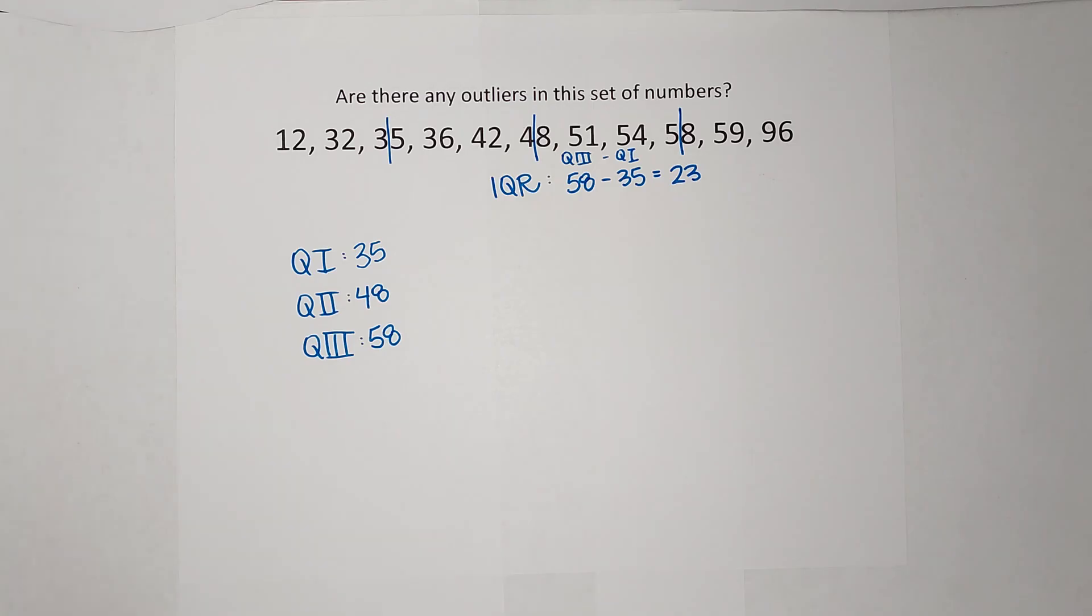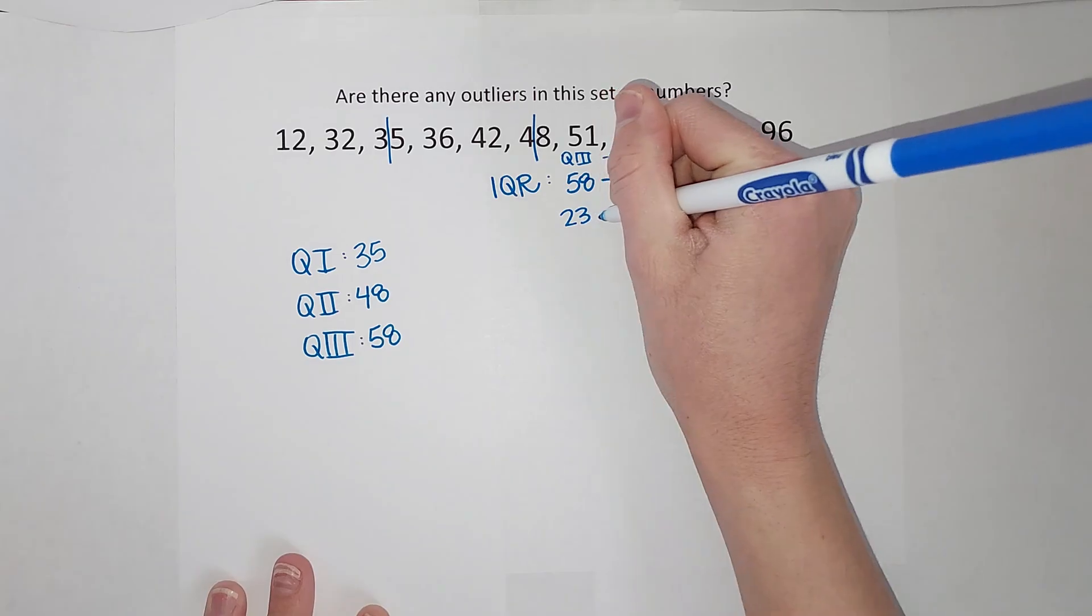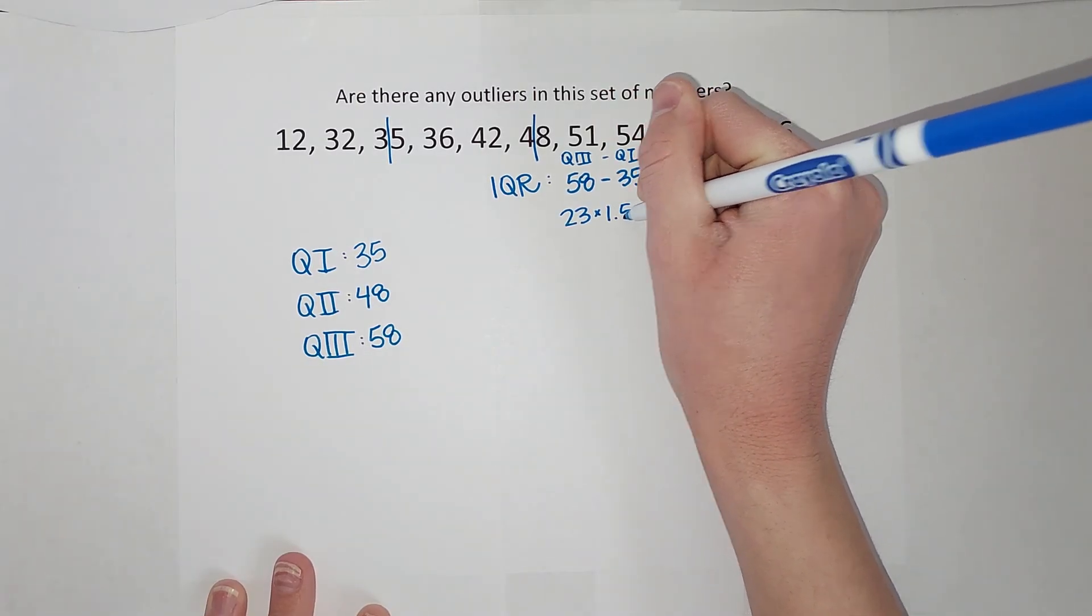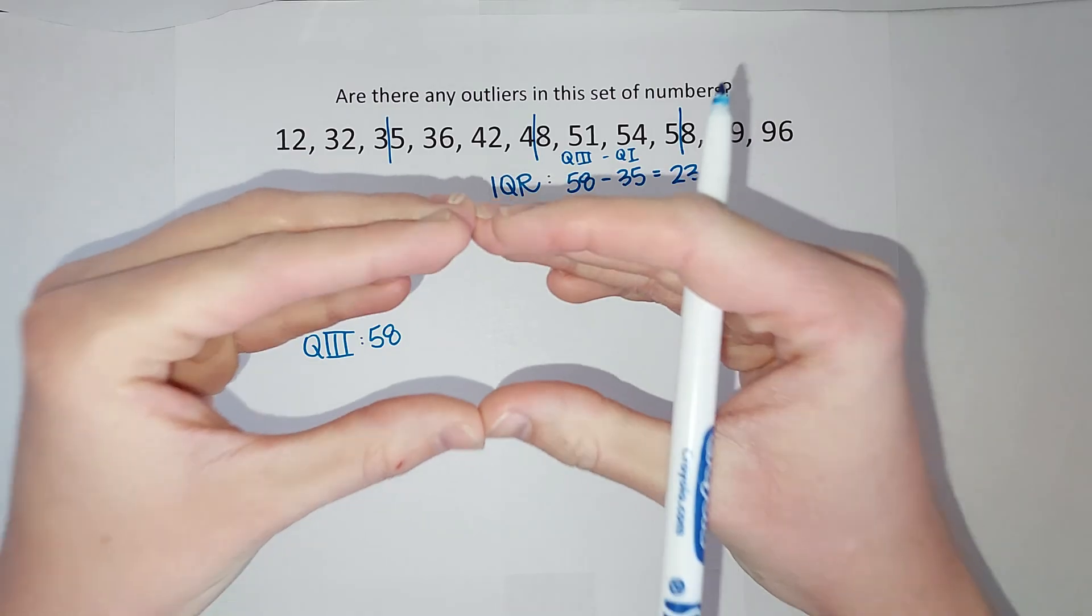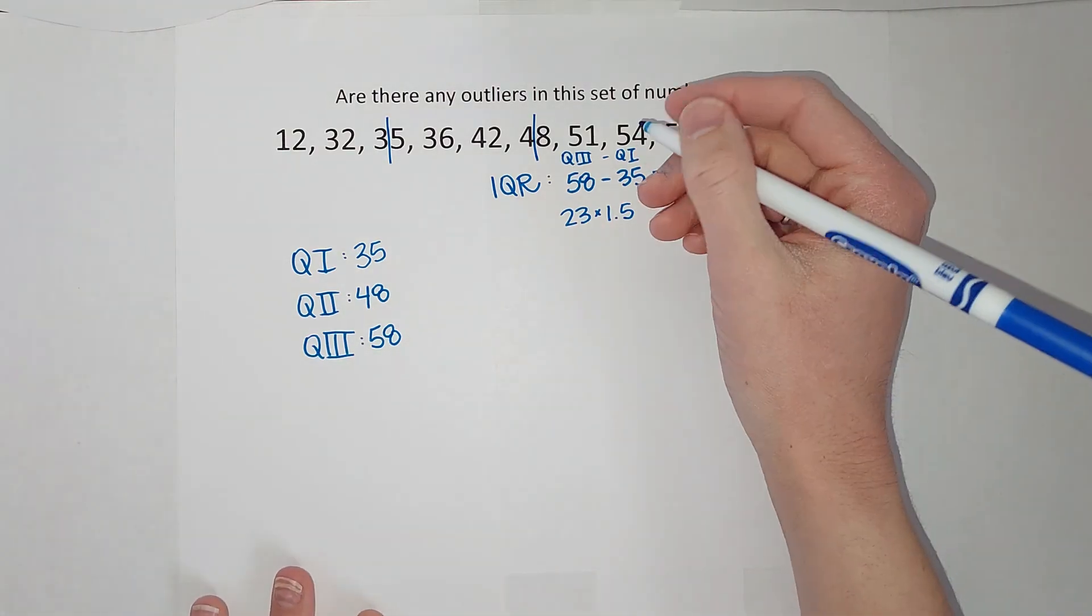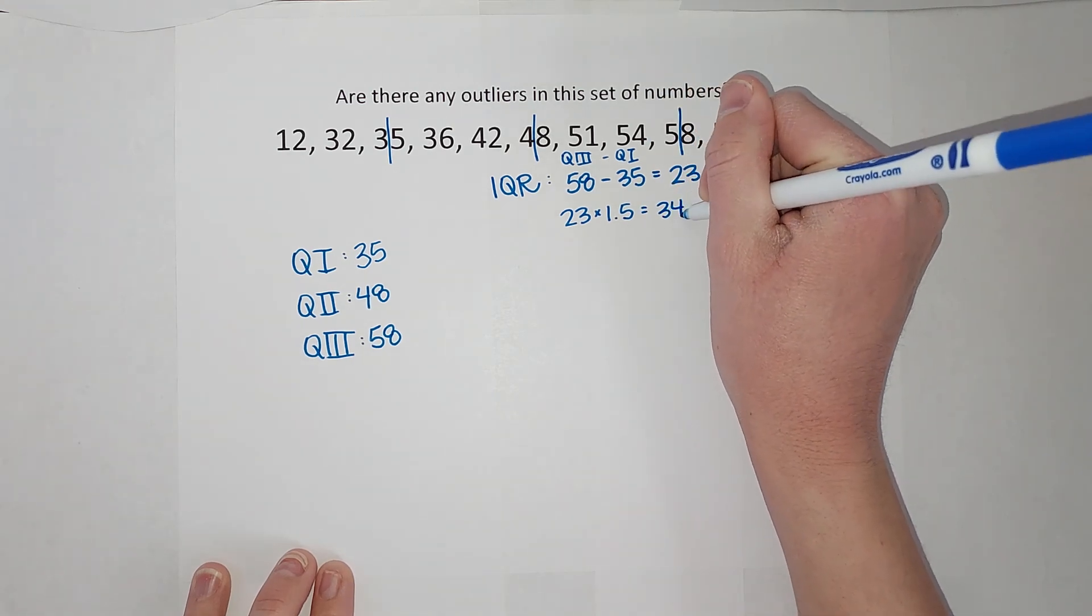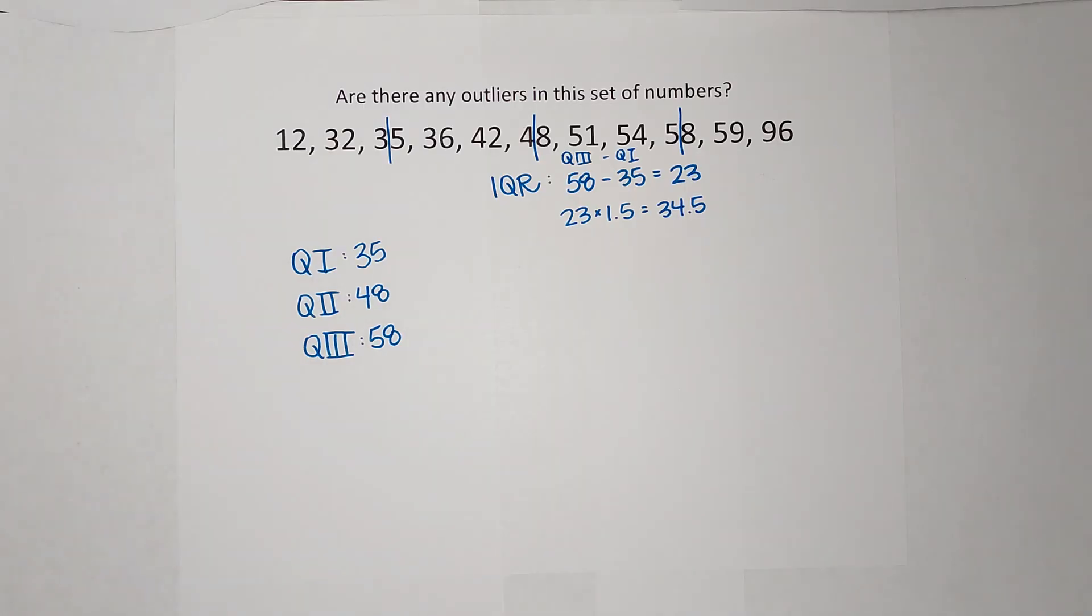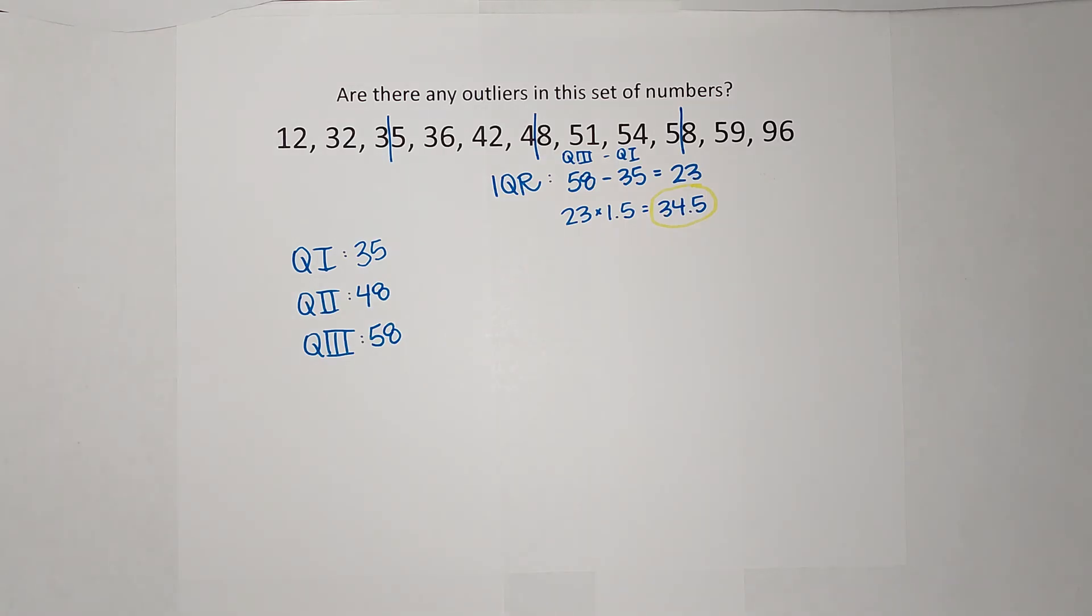So that is my inner quartile range. But, in order to help me find outliers, I'm going to take my inner quartile range and multiply it by 1.5. So basically what they're saying is if there's a piece of data that is more than one and a half boxes away, it's too far. It's an outlier. So when I take 23 and multiply it by 1.5, I get 34.5. And that is my magic number. I wish it had a name. As far as I know, it doesn't. And it needs one.